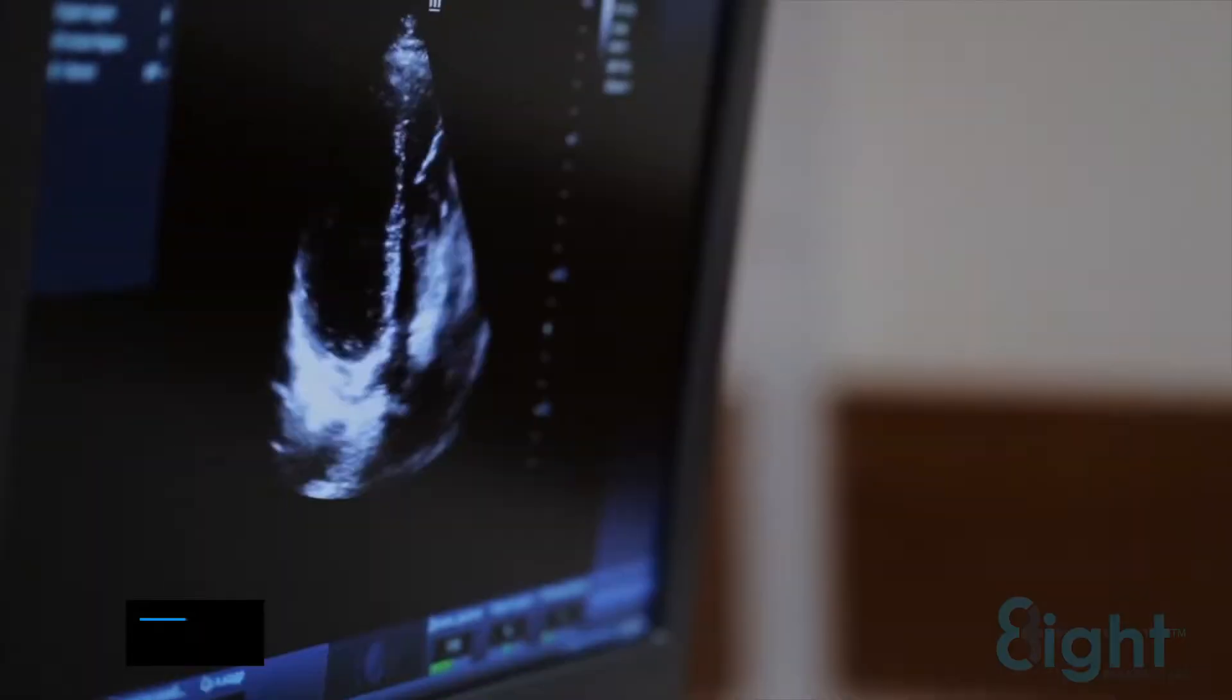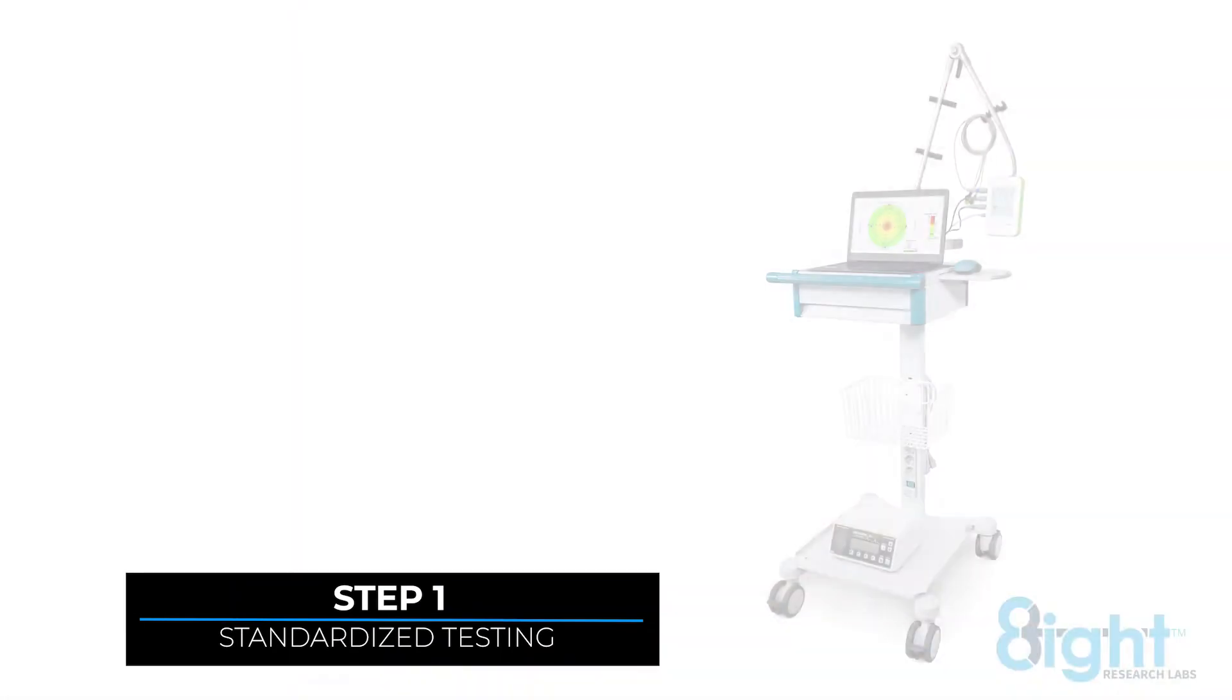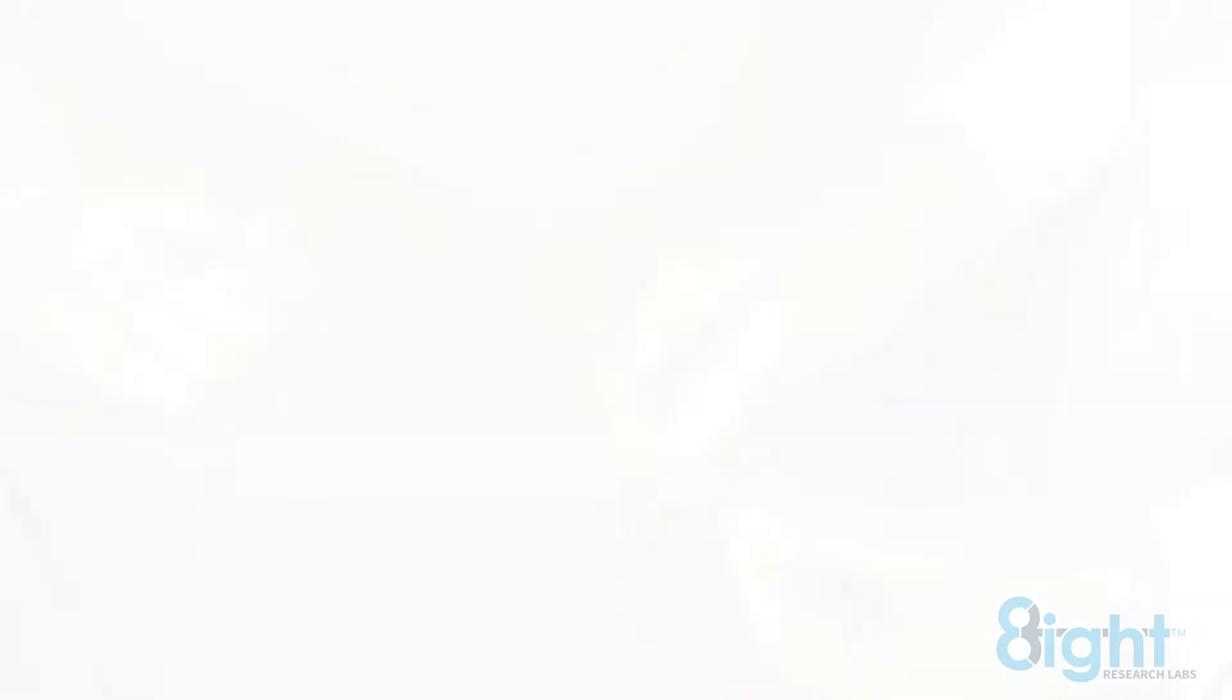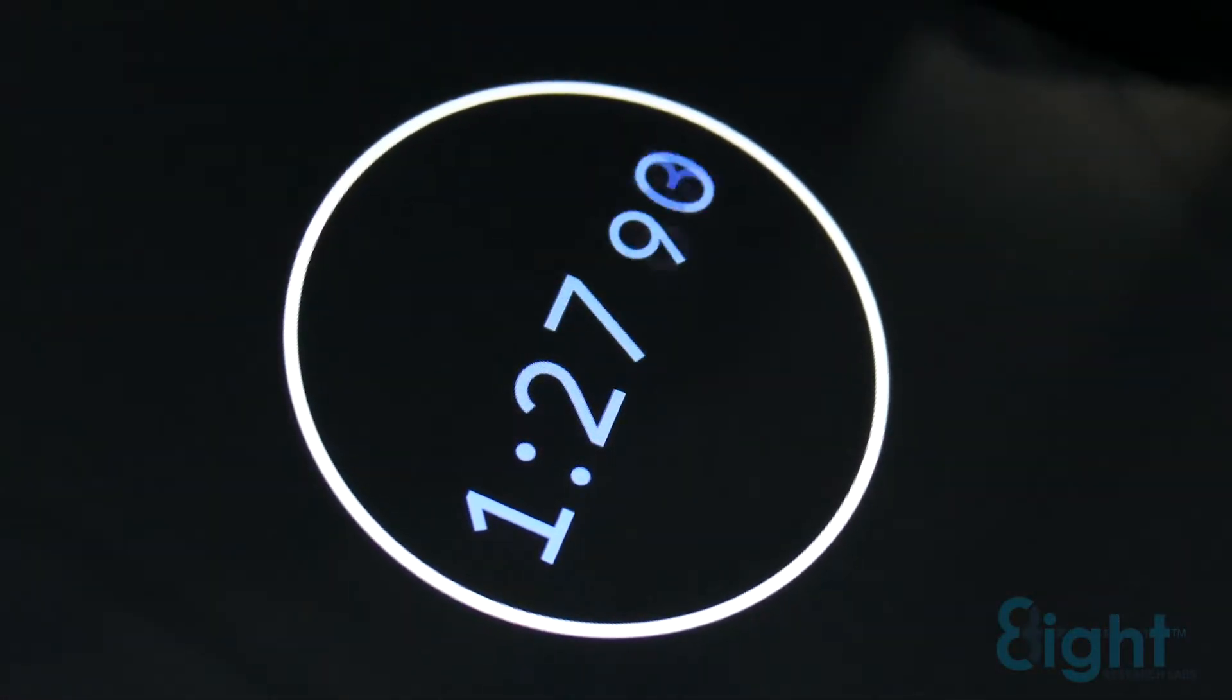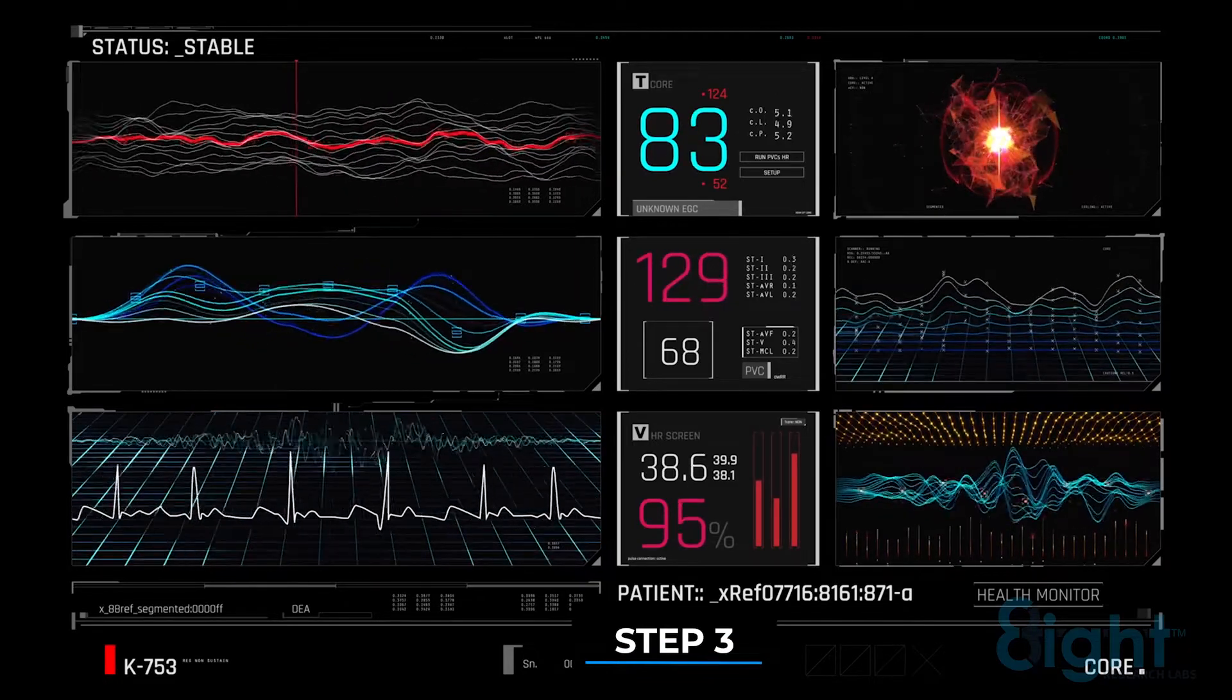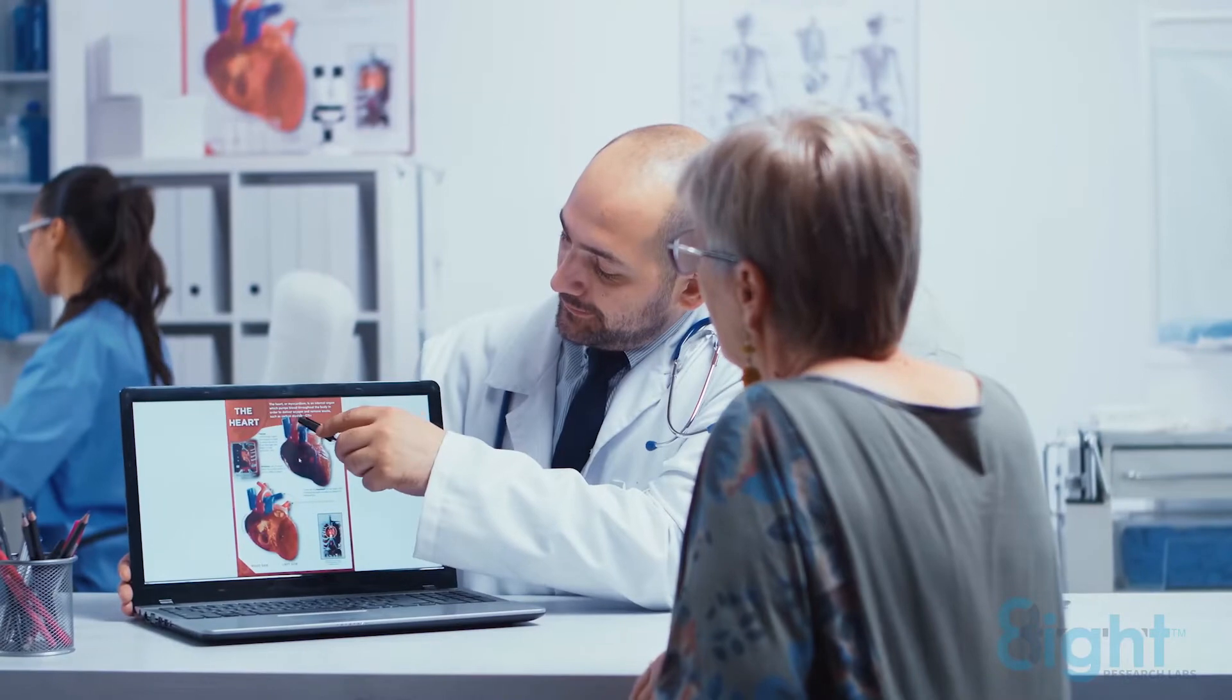Each study begins by taking a subject's resting baseline using an FDA-cleared heart rate variability scanner. Then a bioenergetic product developed by Eight Research Labs is placed within the subject's biofield for 90 seconds. After 90 seconds, while the subject is still resting, another heart rate variability test is recorded and both scans are compared.